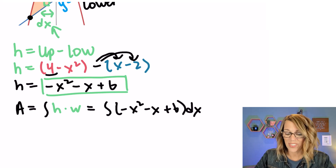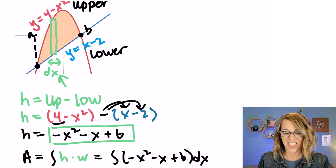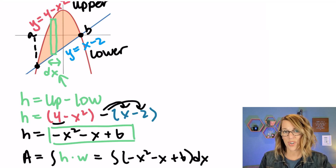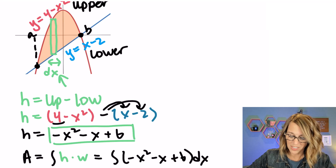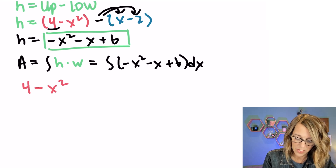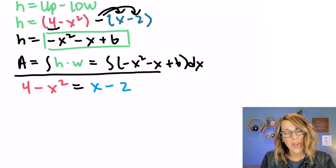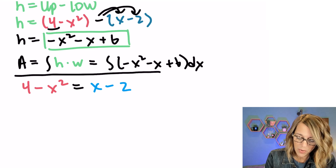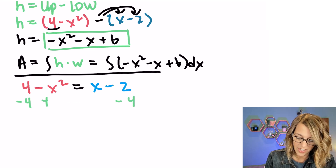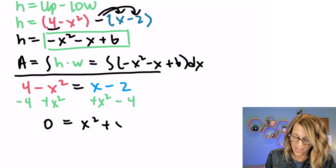Let's find those limits of integration. Those limits are going to be the x values that line up with my intersection points, so my a is here and my b is there. I get those by setting my two curves equal to each other: 4 minus x squared equals x minus 2. Solving for those limits, I want to get zero on one side — this is a quadratic, so let's move everything to the right-hand side. Subtracting 4 and adding x squared on both sides, I end up with 0 equals x squared plus x minus 6.